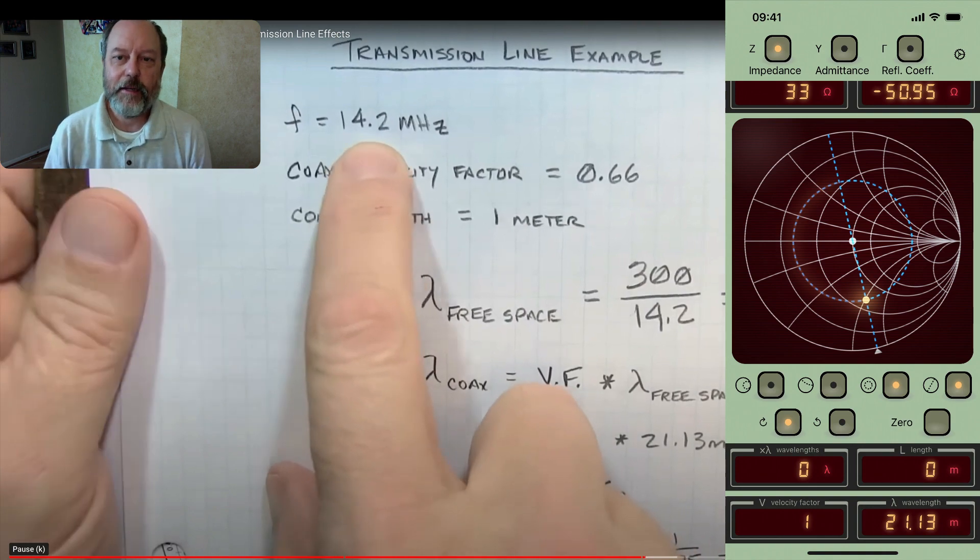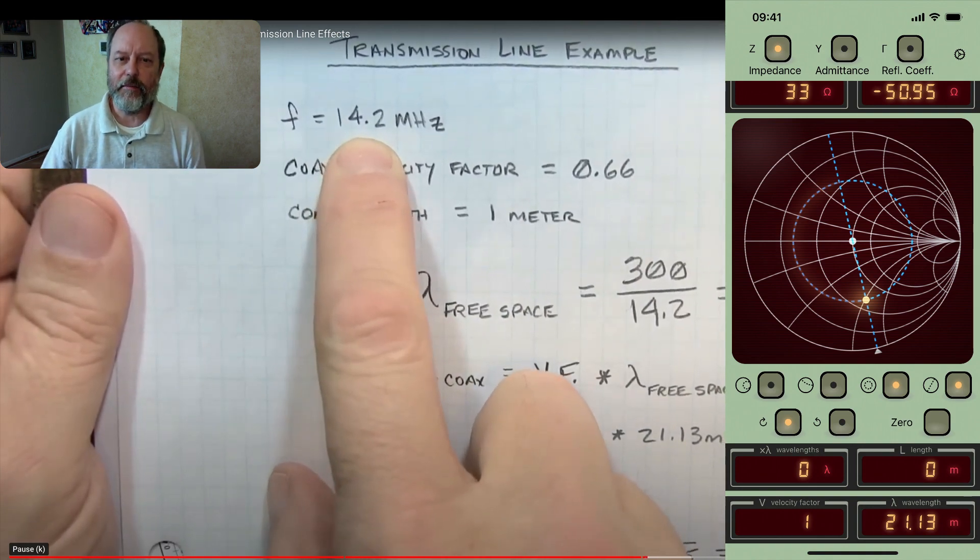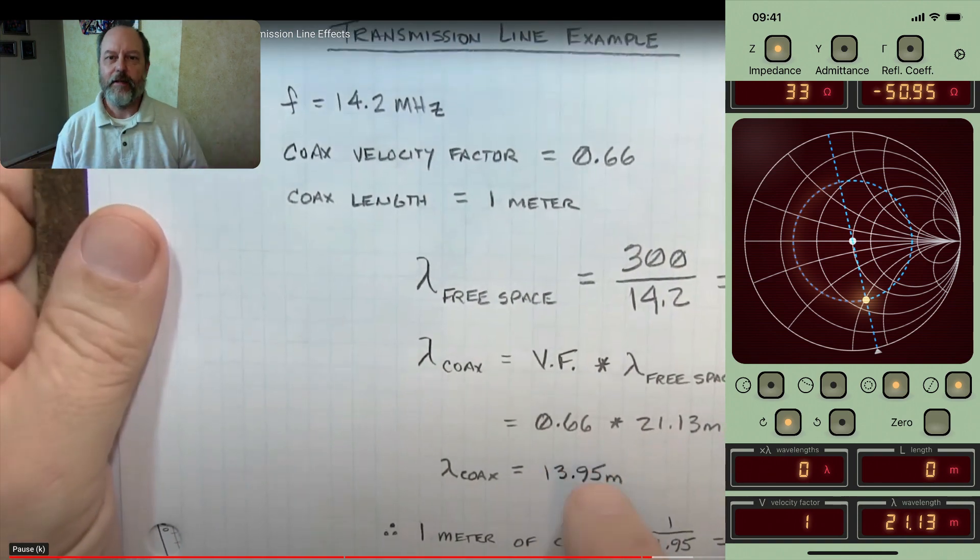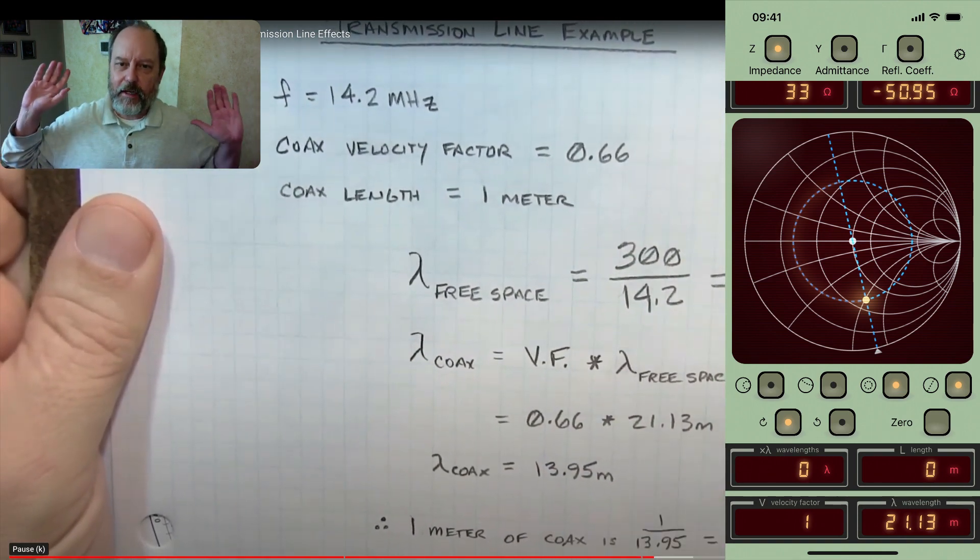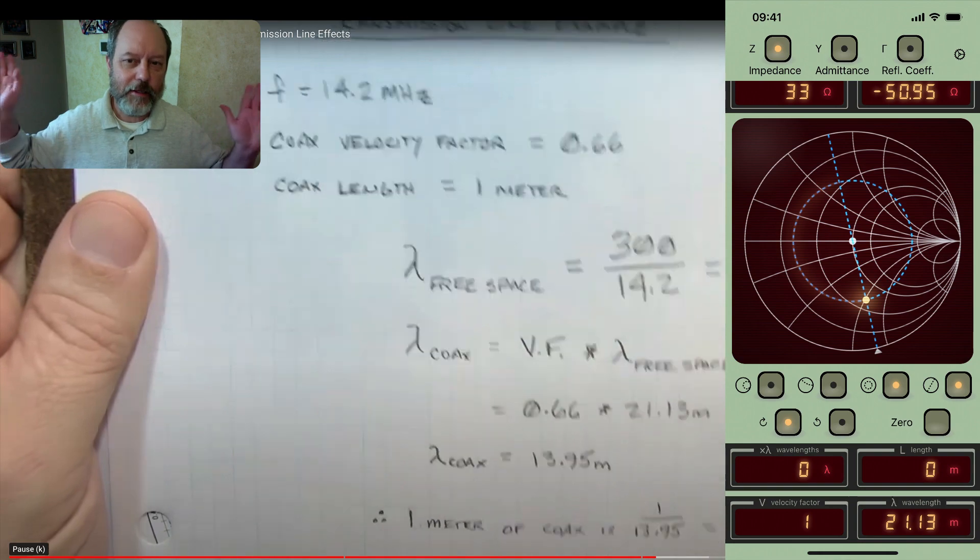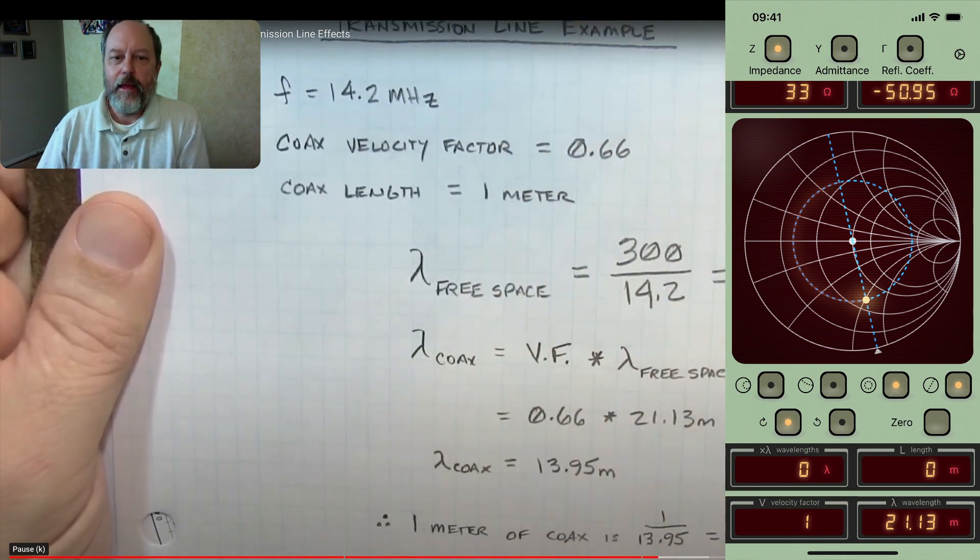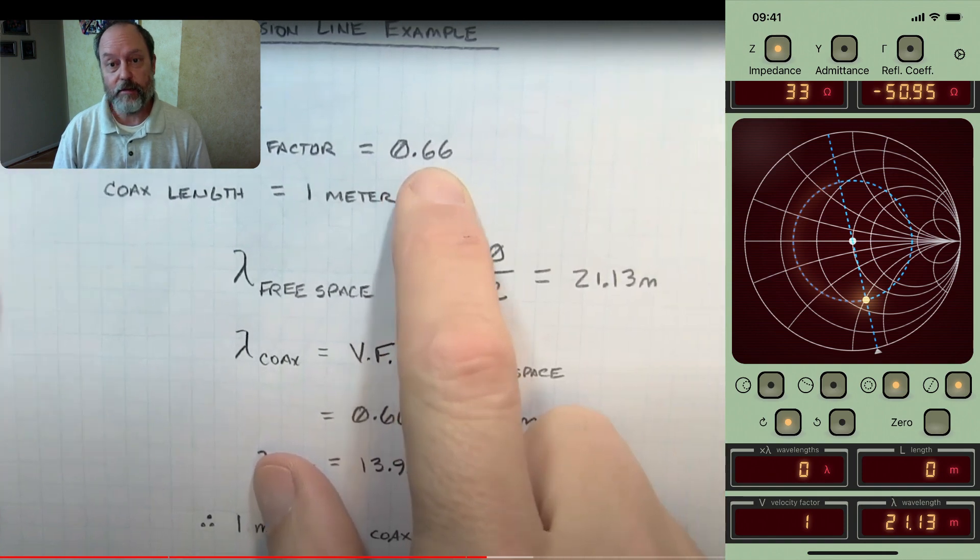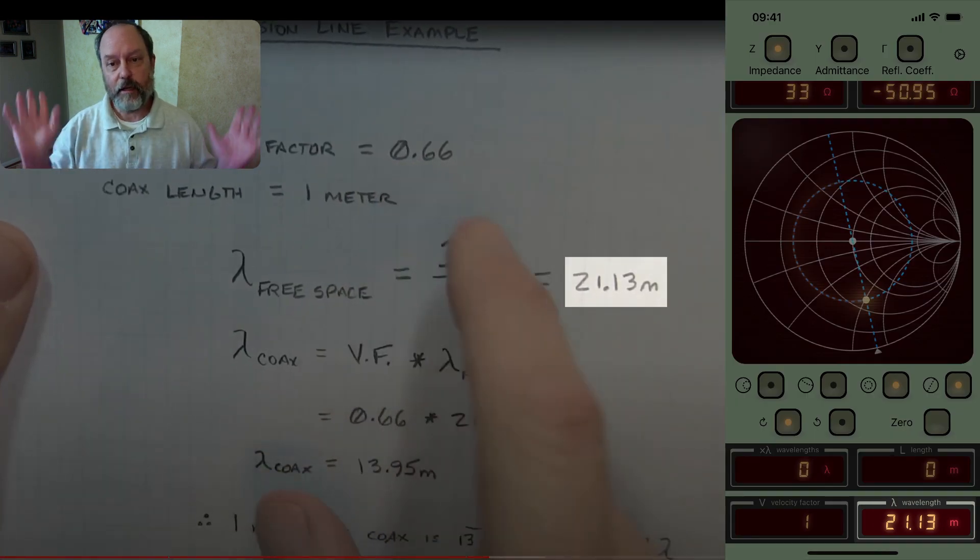Okay, so now let's set up the frequency and wavelength so we can measure the effects of the impedance looking at the load via a length of transmission line. So we have the frequency set up to 14.2 megahertz as we had done earlier. And you can see that the associated wavelength for this frequency is 21.13 meters, just like Alan calculated.